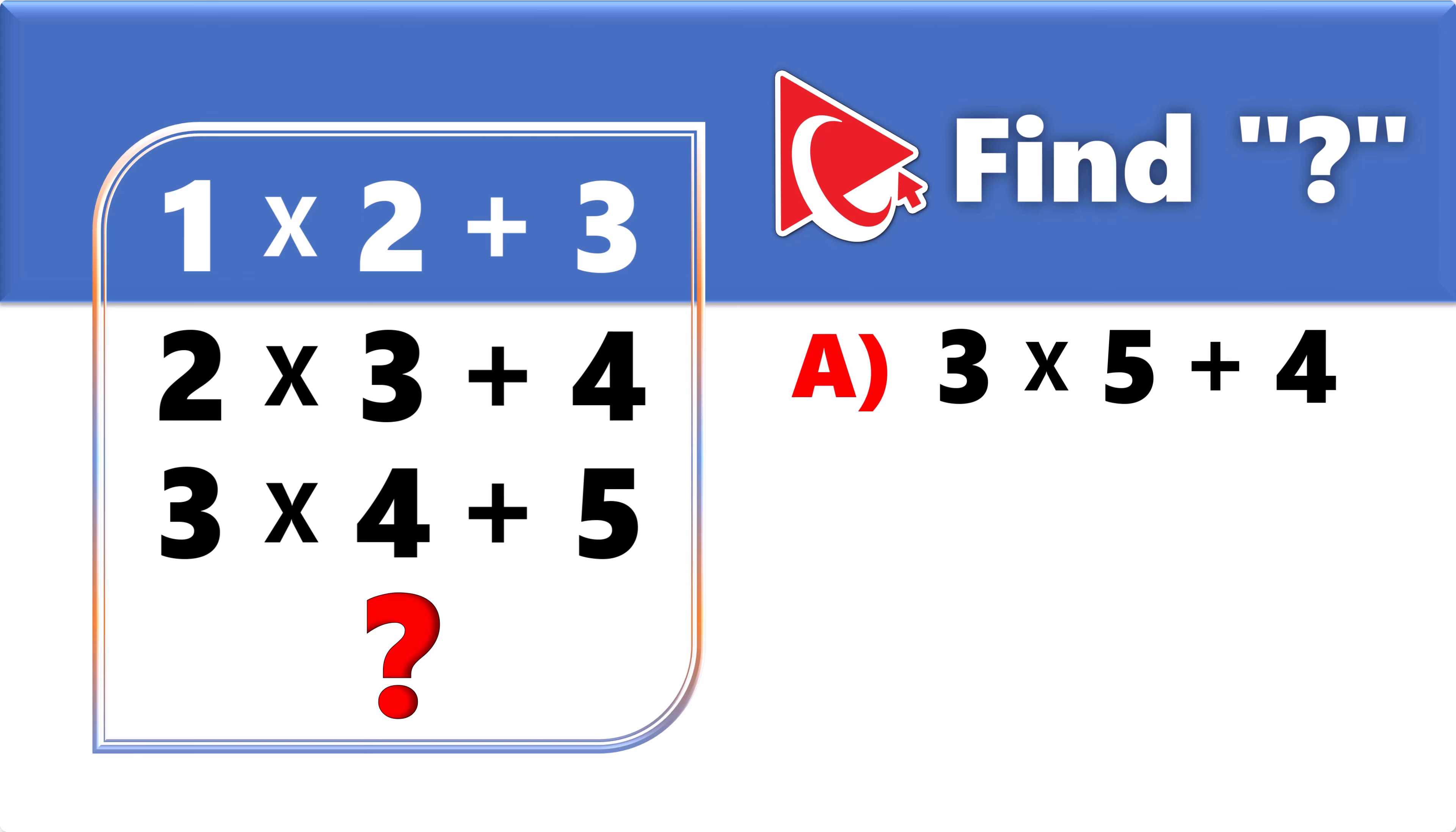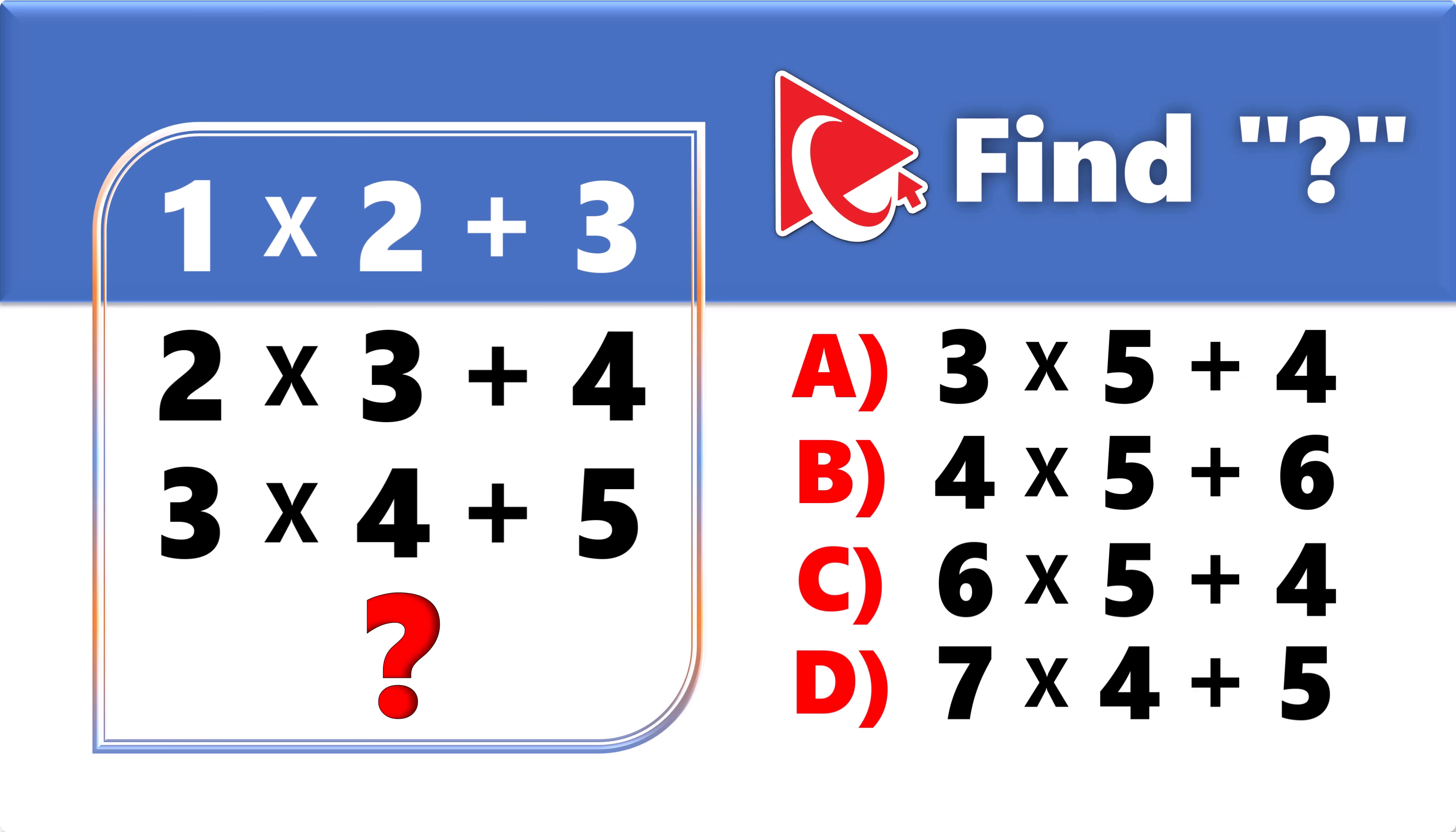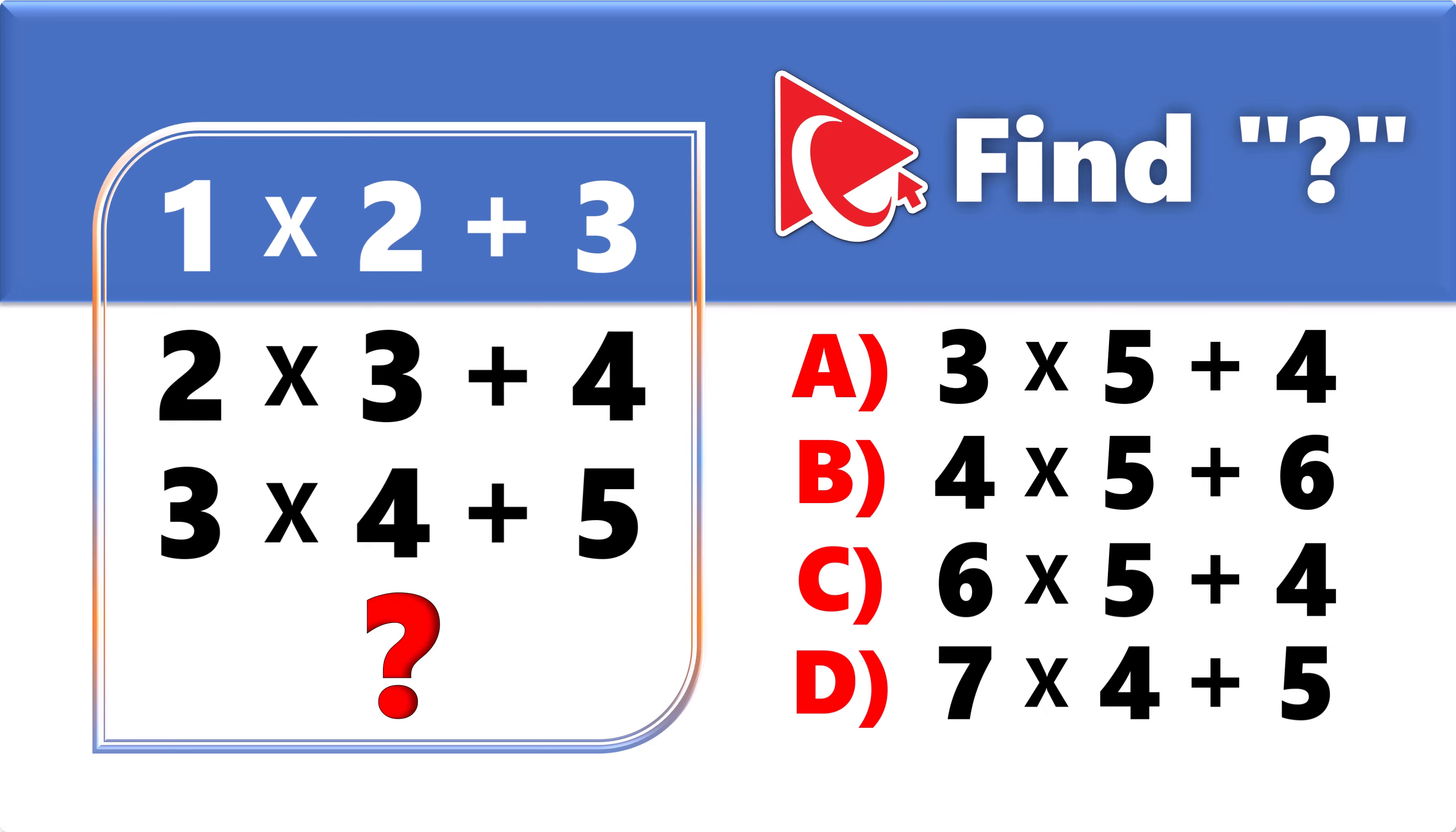The fourth expression would need to be selected and rationalized out of four possible choices: Choice A, 3 by 5 plus 4; Choice B, 4 by 5 plus 6; Choice C, 6 by 5 plus 4; and last but not least, choice D, 7 by 4 plus 5. Take a close look to see if you can come up with the answer.